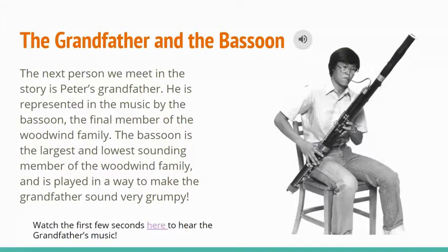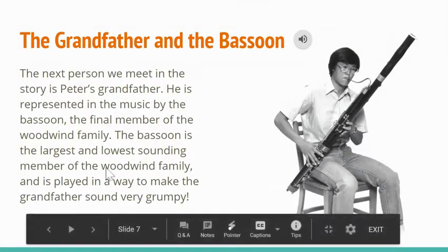The bassoon is the largest and the lowest sounding member of the woodwind family. When it's used in the story, they play it in a way that makes the grandfather sound grumpy, almost like he's yelling at Peter. There we see a gentleman playing the bassoon.